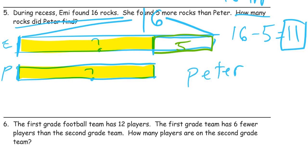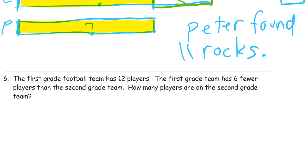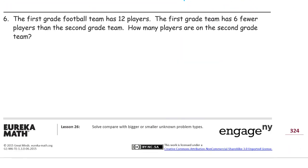Peter found 11 rocks. You could use take from 10, but you don't even have to for this one — if you look at your ones, you've got 6 here and you're only taking away 5 ones. So you're going to have a 1 left over and you'll still have that 10. You don't really even have to take from 10 to solve this one. If you want to draw quick tens and cross out to figure out that subtraction and it works for you, then keep doing it. Write that stuff down if you have any space.